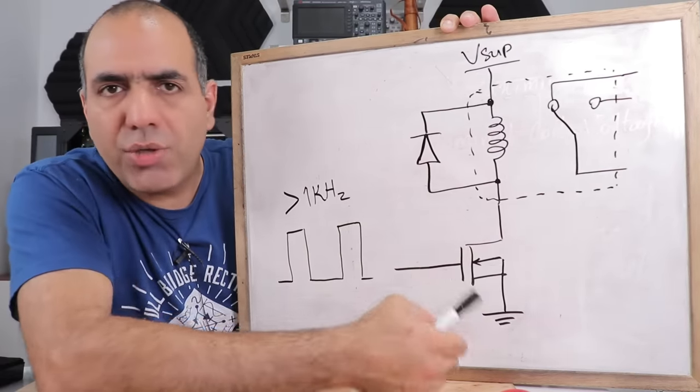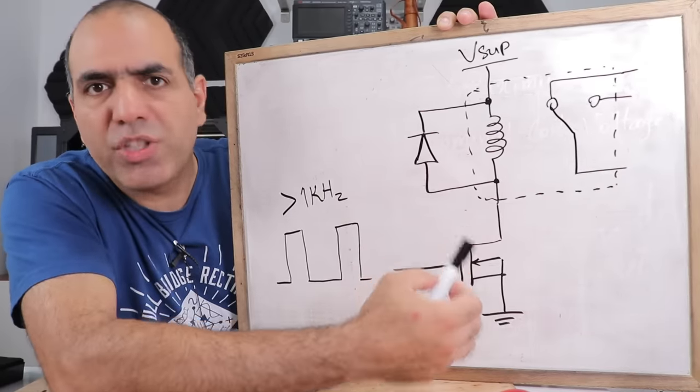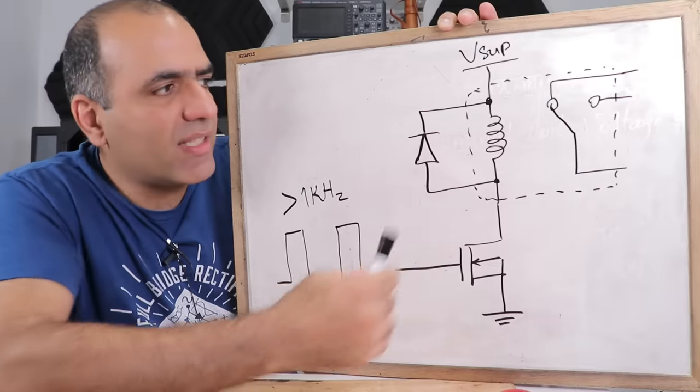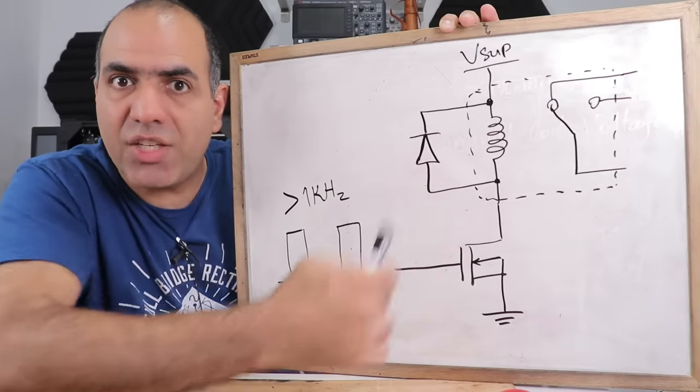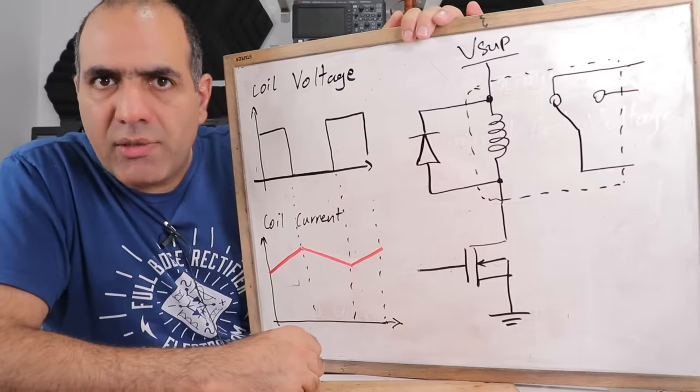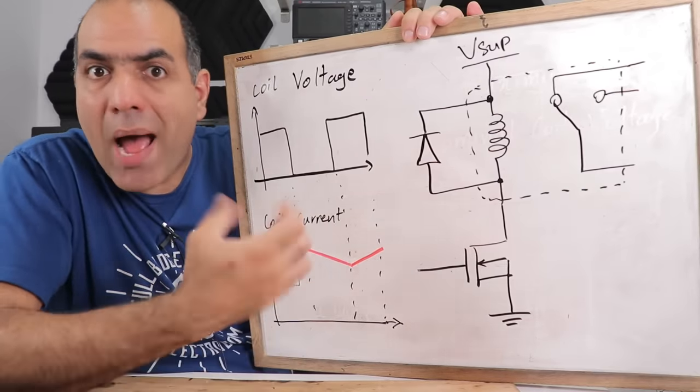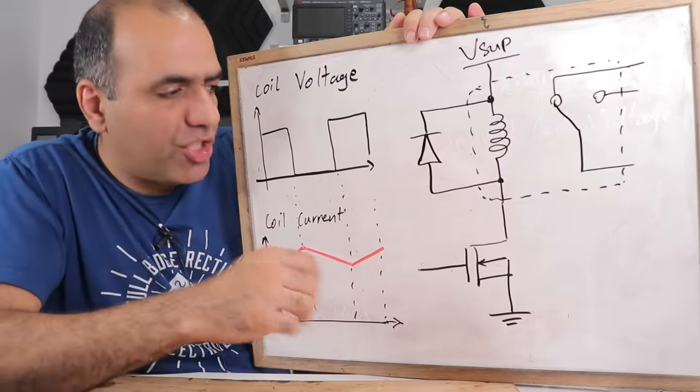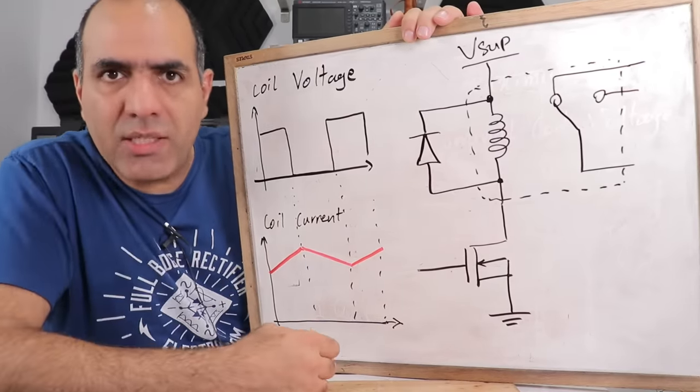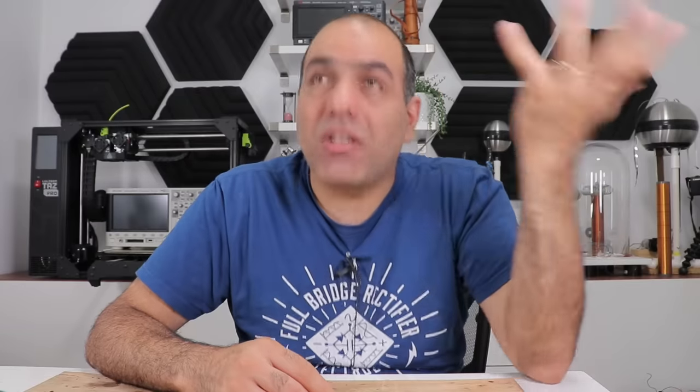But what if you have a supply voltage much higher than what the coil can handle? Easy! Instead of a continuous on signal, you give it a PWM to turn the coil voltage on and off so fast that the coil doesn't have time to de-energize. Something above one kilohertz should be enough. With a proper PWM duty cycle, you can create an RMS voltage and current no more than the maximum power rating allowed by the data sheet. You can even regulate these by adjusting the PWM duty cycle for different supply voltages.